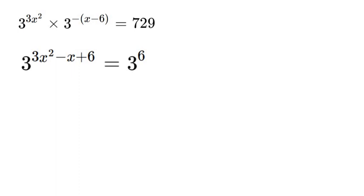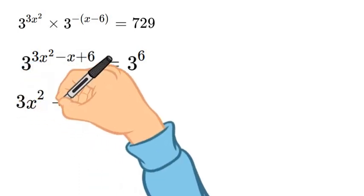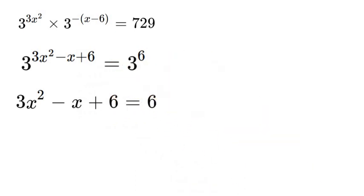Now that we have done that we have two bases that are the same which means to solve for their exponents their exponents are equal. So that means we have 3x squared minus x plus 6 is equal to 6.